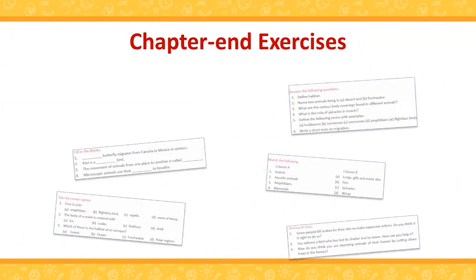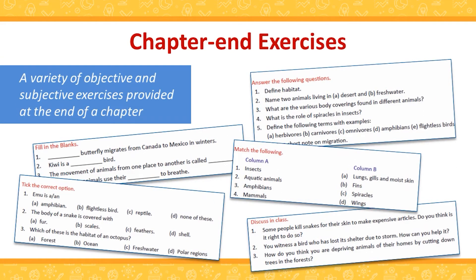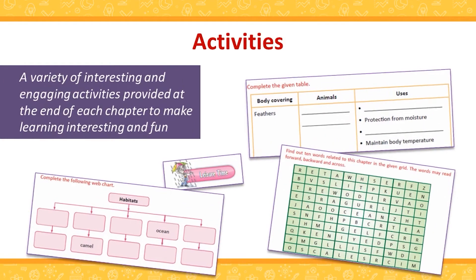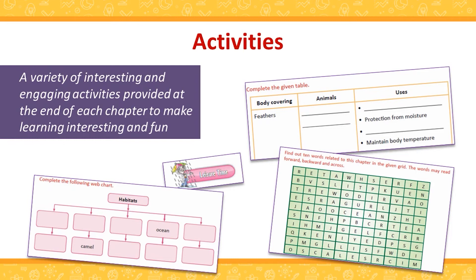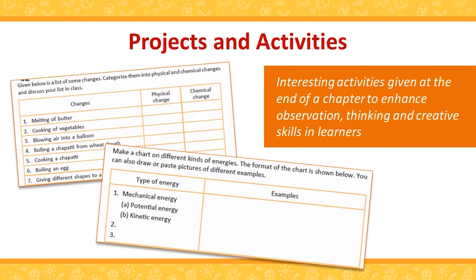Similar to Startup Science 1 and 2, a variety of objective and subjective exercises is provided at the end of each chapter to help learners assess their knowledge of concepts learned in classes 3 to 5. A variety of interesting and engaging activities and projects is provided at the end of each chapter to make learning fun for learners. These activities and projects also aim to develop and enhance observation, thinking and creative skills of learners.